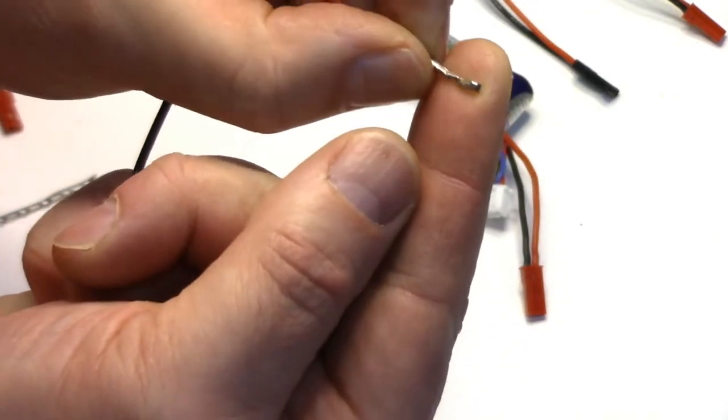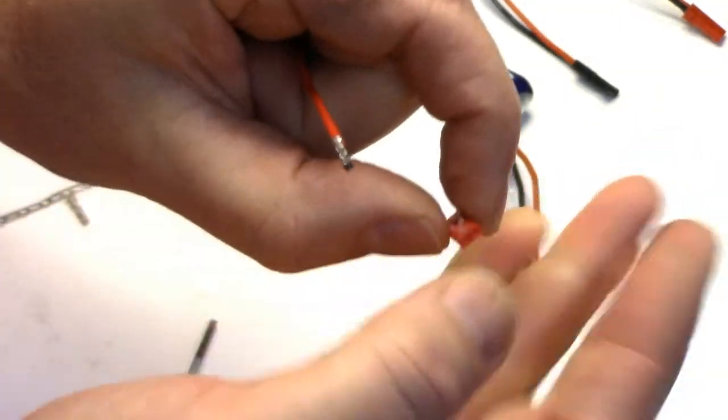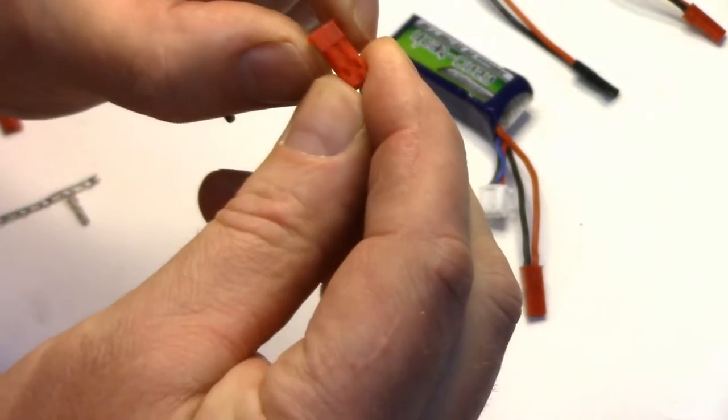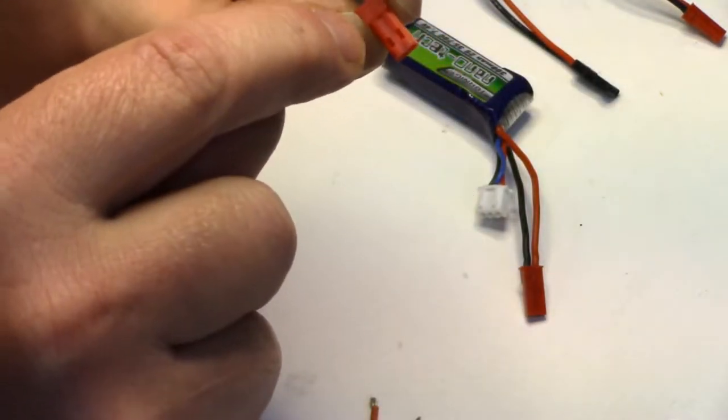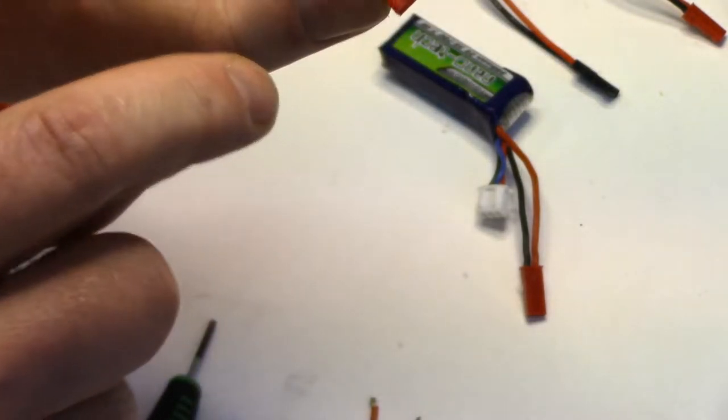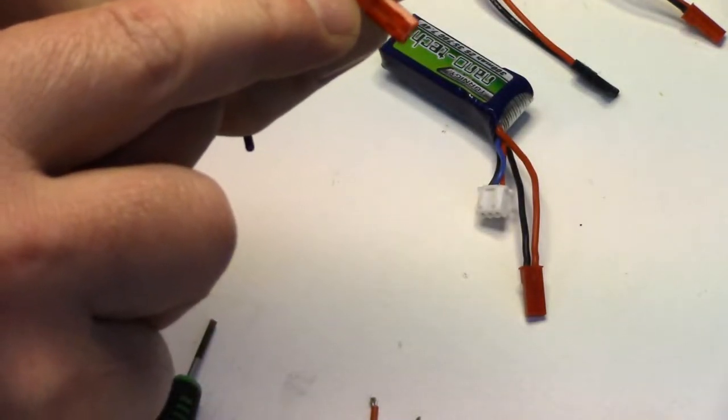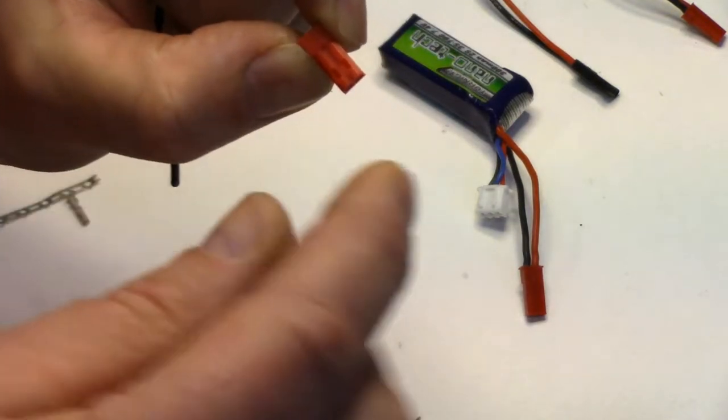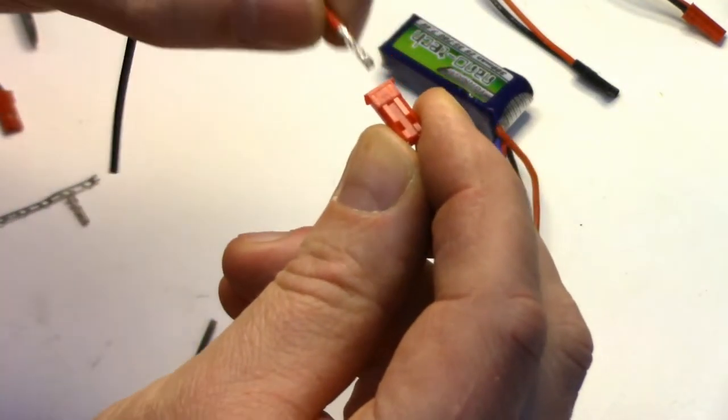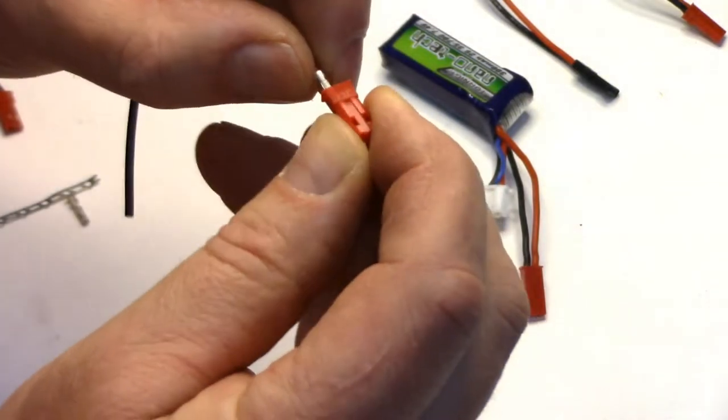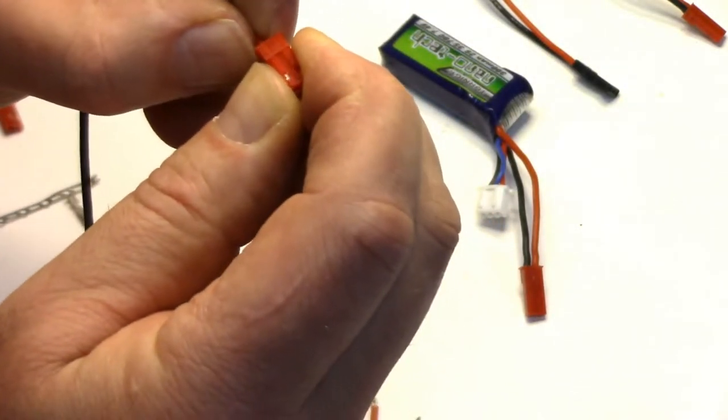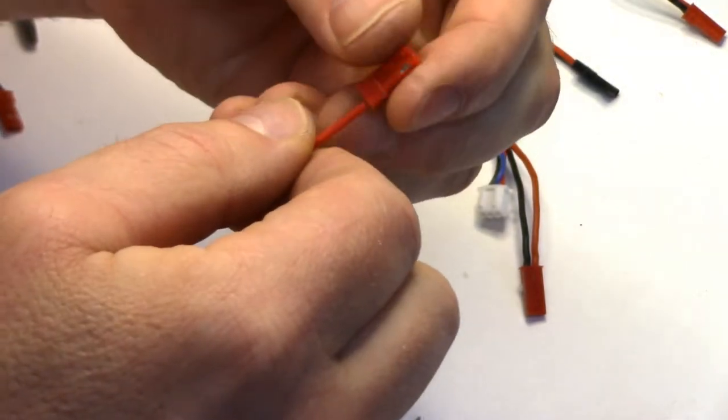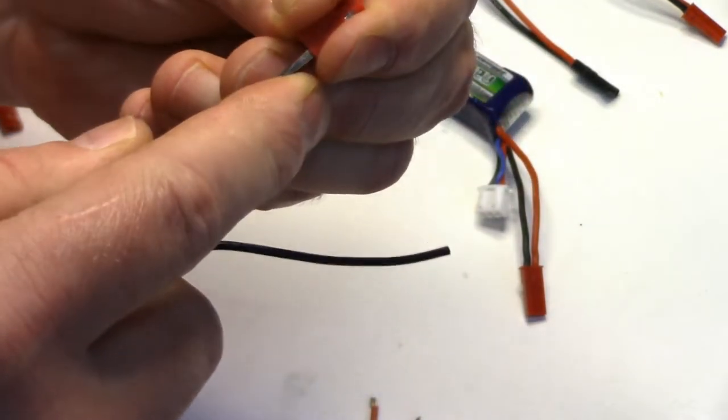So once you've got it crimped, there's a little tab on the top of the pin and that's what slides in and catches in this little hole in the connector. These connectors have tiny numbers, one and a two. One is always the negative and two is the positive. So this is our positive lead so we'll slide it in to the number two spot. You can see it slide in and you need something to push it all the way in. I just use a small flat-bladed screwdriver.